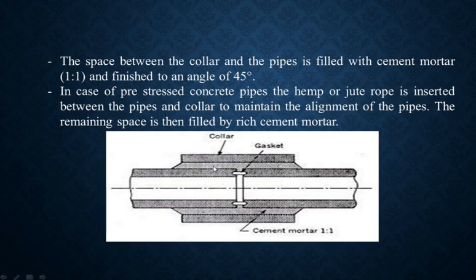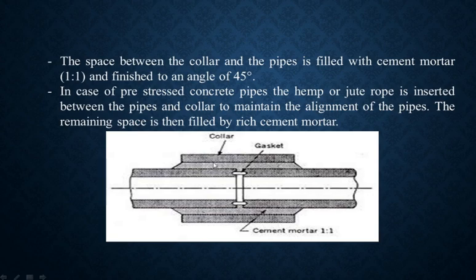So overall, in the cement collar joint, we take two concrete pipes, attach the concrete collar, and fill the space between the pipe and collar with cement mortar. The rich cement mortar mixture fills the space that actually remains between the pipe and the collar.